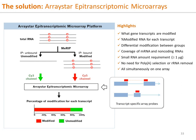The much better solution to these challenges is epitranscriptomic microarrays. In a typical workflow, the m6A immunoprecipitated RNA fraction is labeled with Cy5 red color, whereas the unbound, unmodified RNA fraction is labeled with Cy3 green color. Both fractions are mixed together and hybridized to the same microarray. The intensities in the two color channels can be accurately calculated for not only the abundance of modified RNA, but also the percentage of RNA modification. Importantly, the microarray probes are designed for each transcript-specific splice junction or unique exon sequence, allowing unambiguous and precise measurement of m6A modification for each specific transcript isoform.